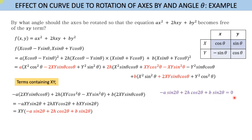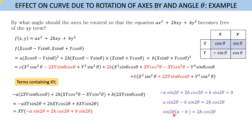Setting the coefficient to zero and rearranging: multiplying by negative one and moving 2h·cos(2theta) to the right gives a·sin(2theta) − b·sin(2theta) = 2h·cos(2theta). Factoring the left side: sin(2theta)·(a − b) = 2h·cos(2theta). Dividing both sides by cos(2theta) gives tan(2theta) = 2h/(a − b), so theta equals half times tan⁻¹(2h/(a − b)). This is the answer.